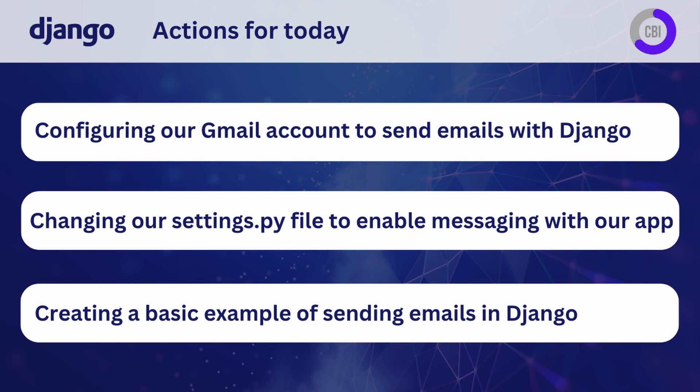Today's focus will be on three main actions. First, configuring our Gmail account so we can send emails through Django. Second, changing our settings.py file to enable messaging inside our app. Third, a basic example of sending emails in Django. We'll jump straight into our Google account to see how to enable Gmail to send emails through our application.